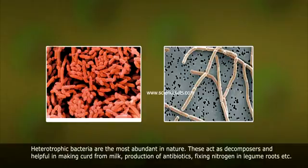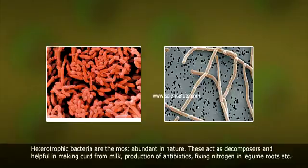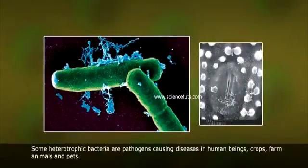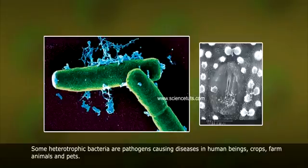Heterotrophic bacteria are the most abundant in nature. These act as decomposers and are helpful in making curd from milk, production of antibiotics, fixing nitrogen in legume roots, etc. Some heterotrophic bacteria are pathogens causing diseases in human beings, crops, farm animals, and pets.